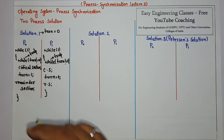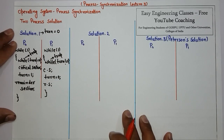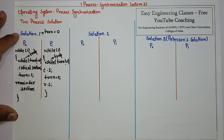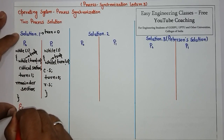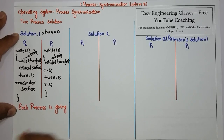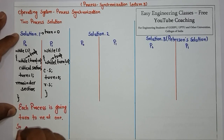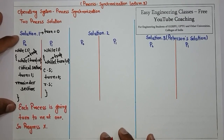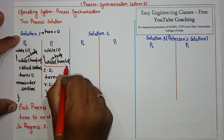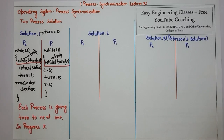The problem with this solution is that each process gives the turn to the next one. The concept of mutual exclusion is fulfilled — only one process is allowed to enter the critical section at a given time. However, the concept of progress is not fulfilled, so this is not one of the best solutions. The trap section can be marked in the entry section.